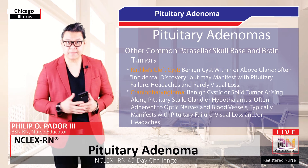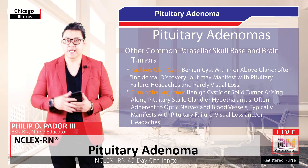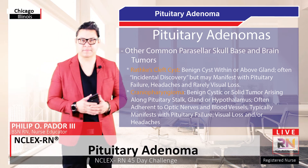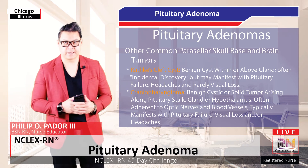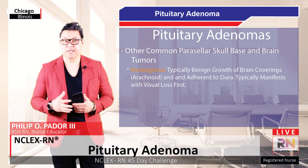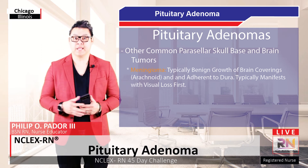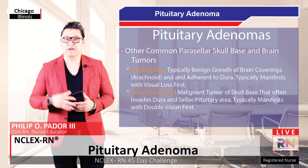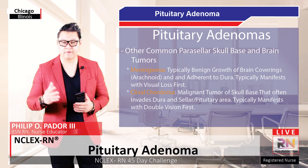Craniopharyngiomas, which are benign cystic and solid tumors, can arise along the pituitary stalk and can lead to similar symptoms. They typically need surgical treatment. Craniopharyngiomas are generally benign tumors that often present with visual loss. Finally, clival chordomas arising from the skull base can often result in double vision.